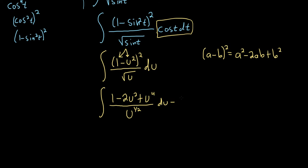This is equal to, I'll do it over here, it's 1 over u to the 1 half, minus 2u squared over u to the 1 half, and then u to the fourth over u to the 1 half.